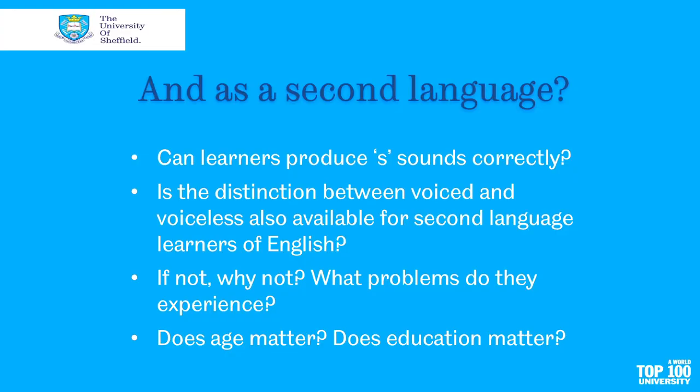So what happens with a second language? This brings about questions like: can learners produce S sounds correctly? Is the distinction between voiced and voiceless sound also available for second language learners of English? And if it's not, why not? Is it something to do with the nature of their first language? What problems do they experience? What variables are relevant in understanding how they acquire language? Does age matter? Does education matter? These are some of the questions that are explored in an important area of applied linguistics called second language acquisition.